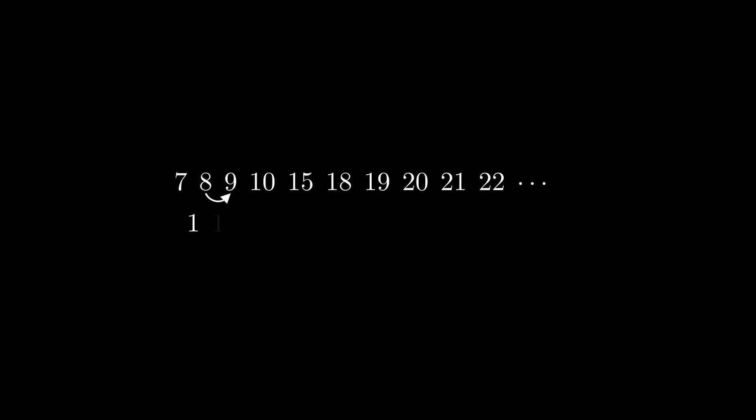This sequence of numbers generates primes in a surprising way. If we look at how much each number increases from one to the next — for example, from 7 to 8 is an increase of 1, 8 to 9 is another 1, then another 1, then 5, 3, and so on — we always seem to get a prime number or the number 1.